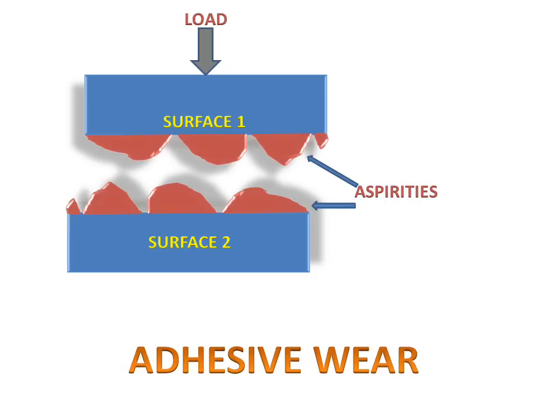Today we will discuss about adhesive wear, how it will happen, and what will happen when adhesive wear will occur. There we have two surfaces: surface first and surface second. Surface second is a fixed surface, not movable. And surface first is a movable surface.